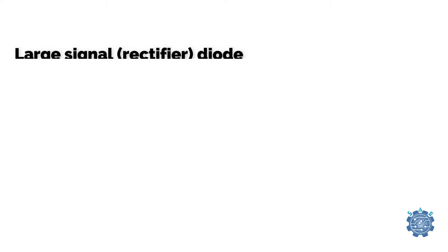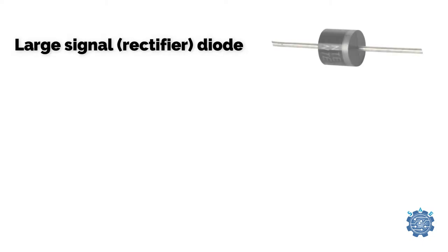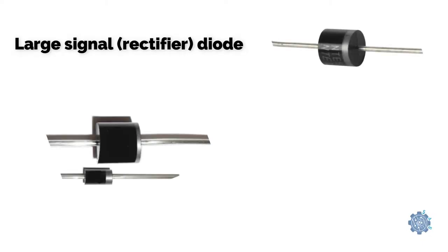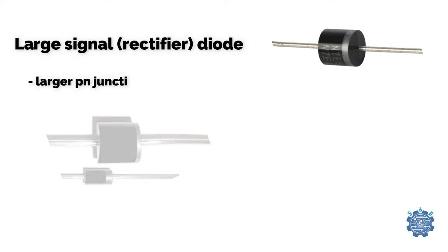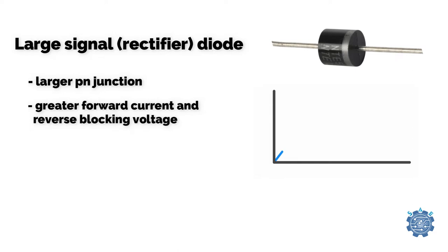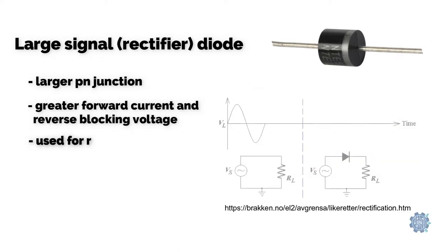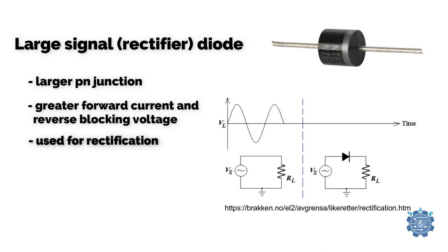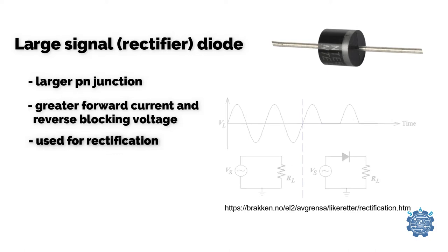Large Signal Diode, or Rectifier Diode, in comparison with the first type of diode, has a larger PN junction so the forward current and the reverse blocking voltage can be greater. They are usually used for rectification but they are not a good choice for high frequency applications.